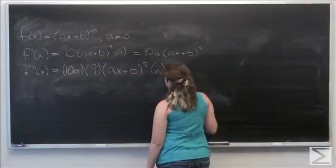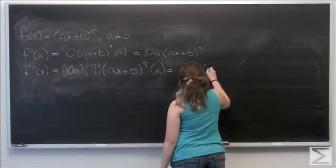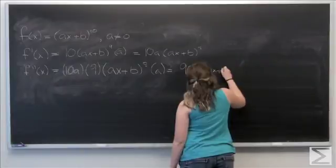So that's equal to 90a squared times ax plus b to the 8th.